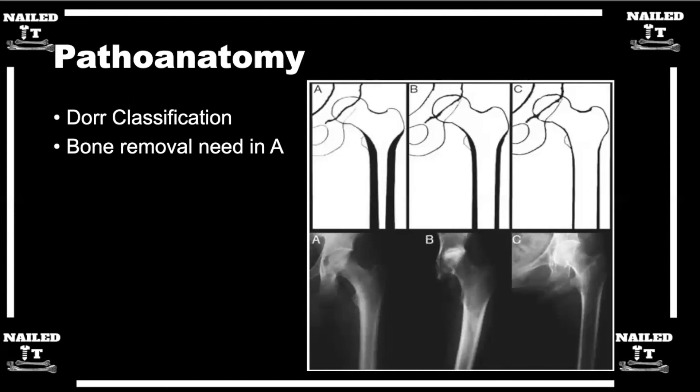Dorr A is when we have a thick cortex, and Dorr C has that classic stovepipe appearance. For a Dorr A, you may have to ream a little bit more, versus a Dorr C where you may not have to ream as much. But that proximal cortex may be a little thin in a Dorr C, so you may be depending a bit more on your implant because it's definitely more osteopenic or osteoporotic bone.